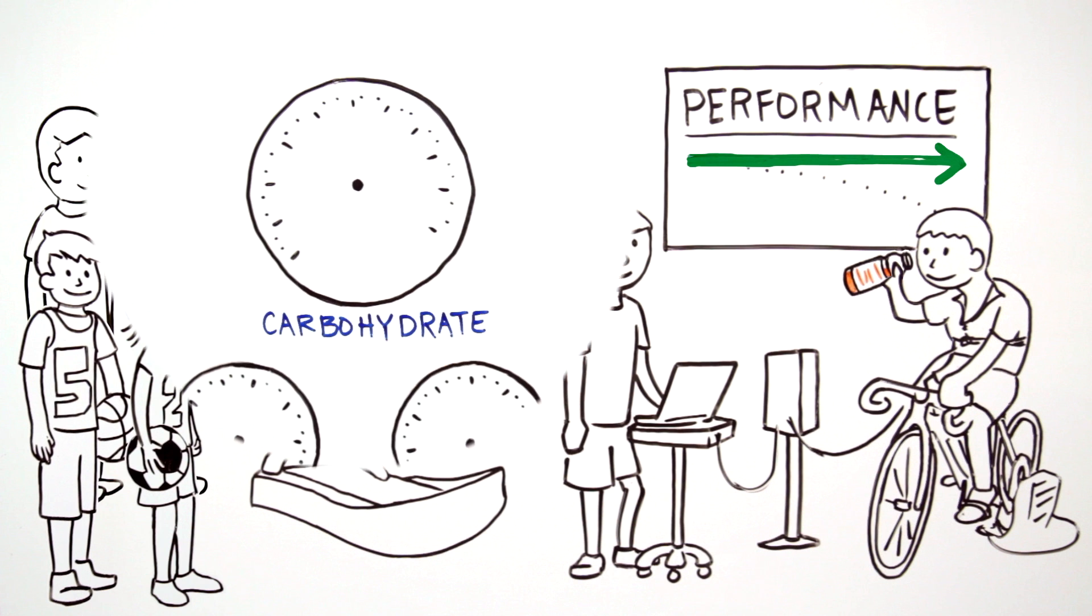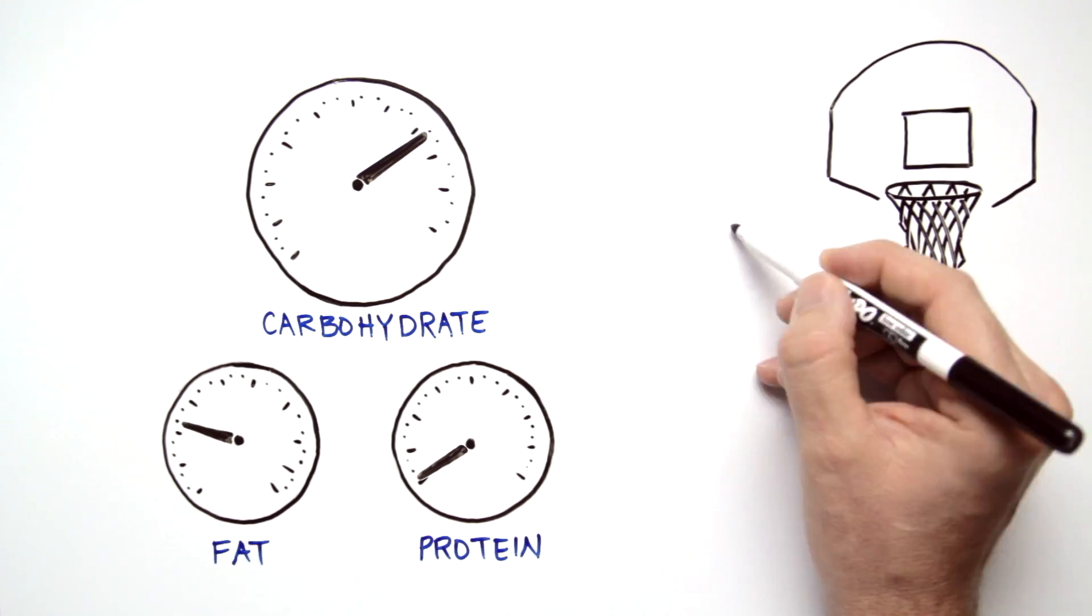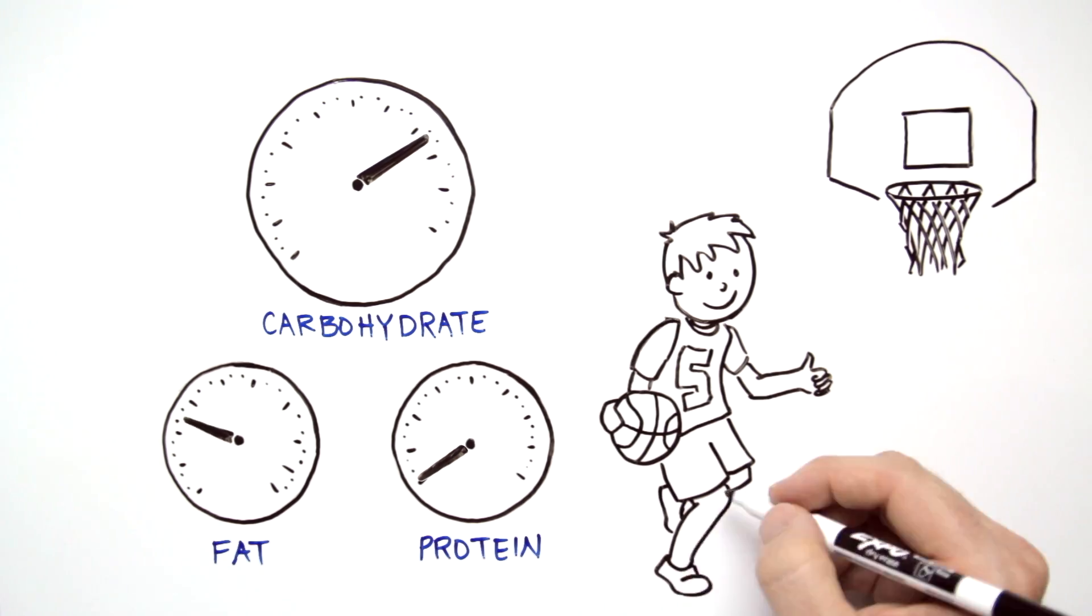You see, although muscles use a mixture of fuels, carbohydrates in the form of sugar are the primary ones used during higher intensity training and competition.